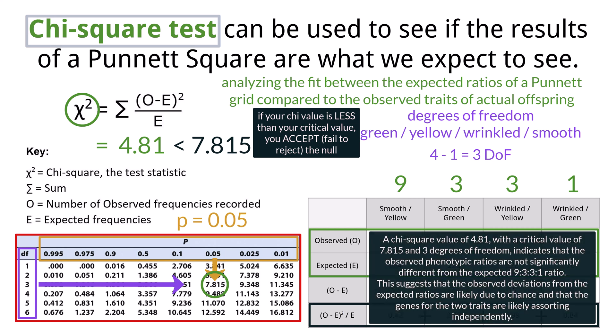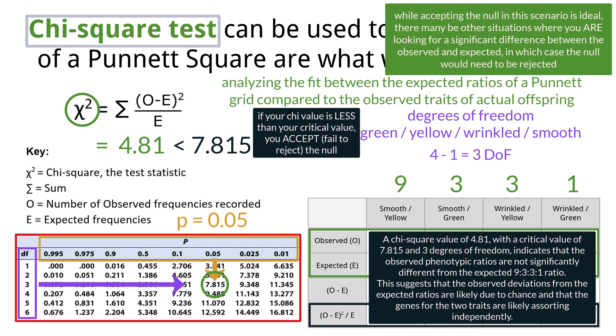In other words, our observations follow the ratios we expected to see, as we wanted there to be no significant difference between the values, meaning in this case we were looking for the probability value to be above 5%. Keep in mind that this is not always the case when using chi-square tests, and many times you want to reject the null and not fail to reject it.